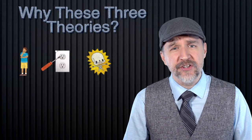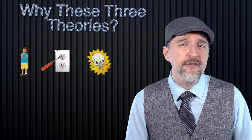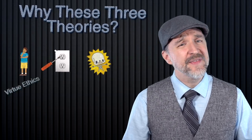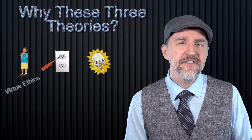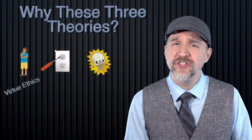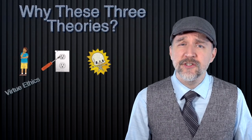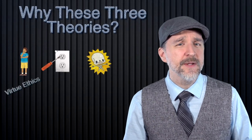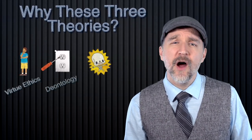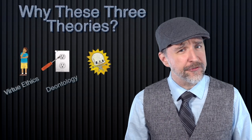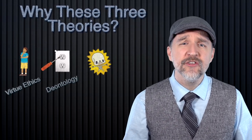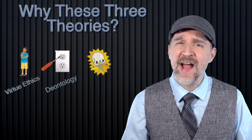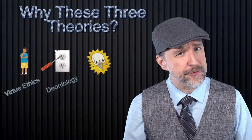Each of the three umbrella theories roughly corresponds to one of these essential components of human action. Virtue ethics focuses on the agent, asking questions about what type of person we should strive to be, what type of character we should seek to develop. In other words, virtue ethics tells us what it means to be a good person. Deontology focuses on the act itself. According to this theory, we have a duty or obligation to do certain acts because the acts are right in and of themselves.